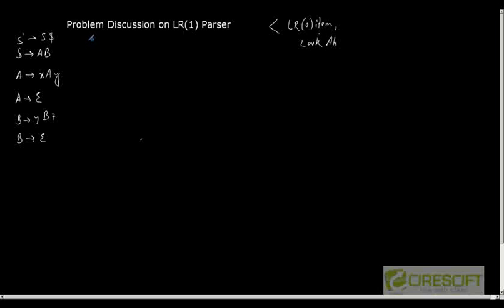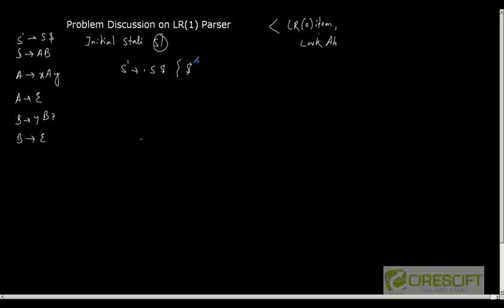Let us start by first drawing the LR0 item set and then appending the corresponding look-ahead symbol. The initial state — let's call it S1 — will contain S' as dot S dollar. The look-ahead symbol after parsing S is dollar. So this is our first LR1 item.